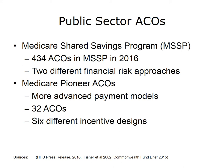In the MSSP model, ACOs that meet quality benchmarks and keep spending below budget will share in the savings they achieve with the federal government — the Centers for Medicare and Medicaid Services. As of 2016, there were 434 ACOs participating in the MSSP, using two different financial risk approaches. The Medicare Pioneer ACO program was launched for providers ready to test more advanced payment models. This program is much smaller than the MSSP and was considered appropriate only for the most advanced ACOs, beginning with 32 ACOs using six slightly different financial incentive designs.